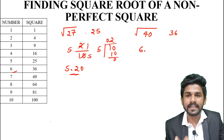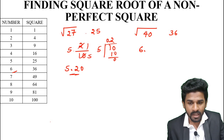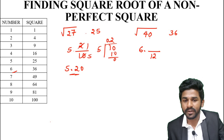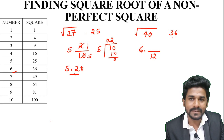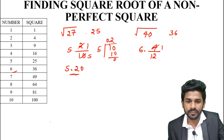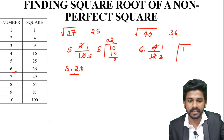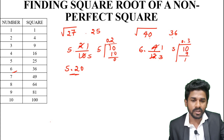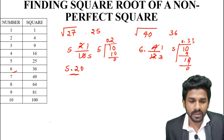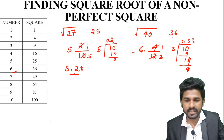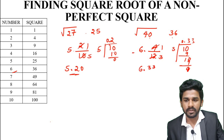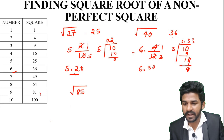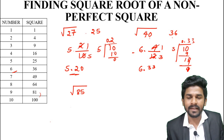Next: root of 40. The answer is 6 point something. The nearest perfect square is 36, so √36 = 6. Double 6 is 12. Then 40 minus 36 = 4. So 4 divided by 12 = 0.33. Therefore, √40 ≈ 6.3.